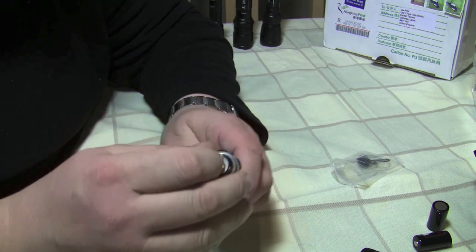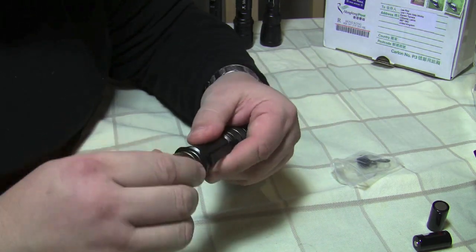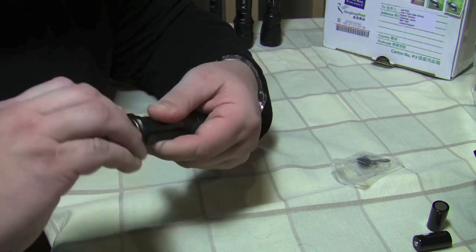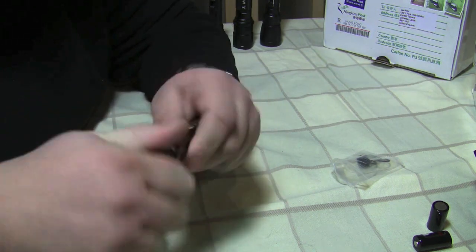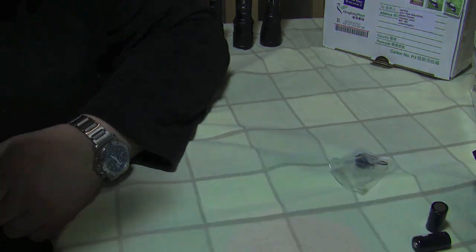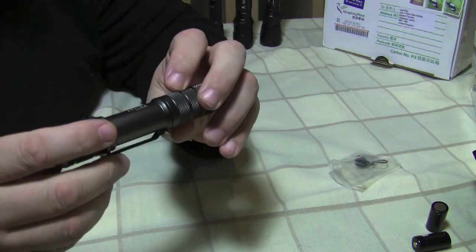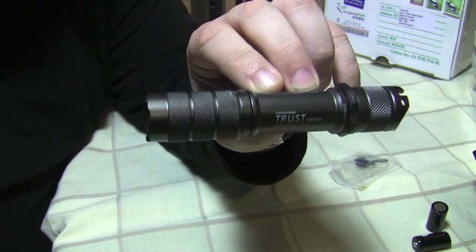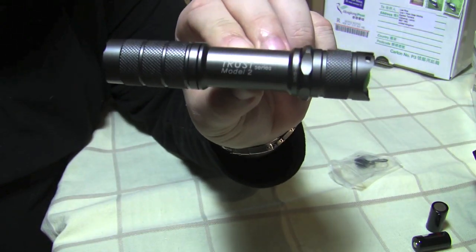18650 positive up. Put the tail cap back on again, and you'll find that it works. So there you have it, the Luma Power Trust Model 2.